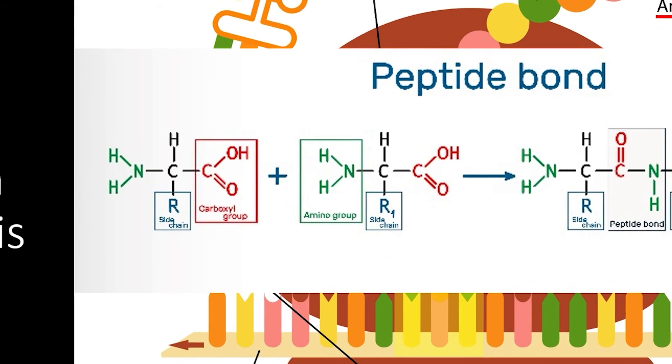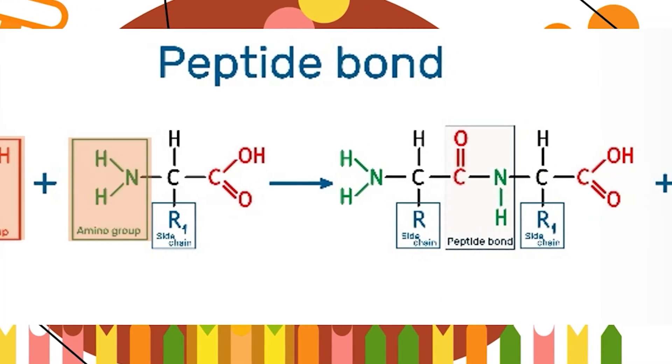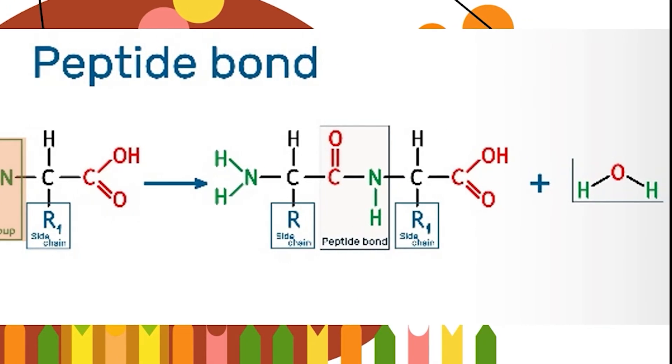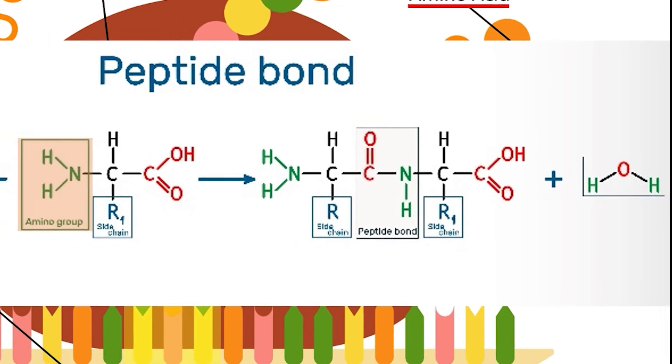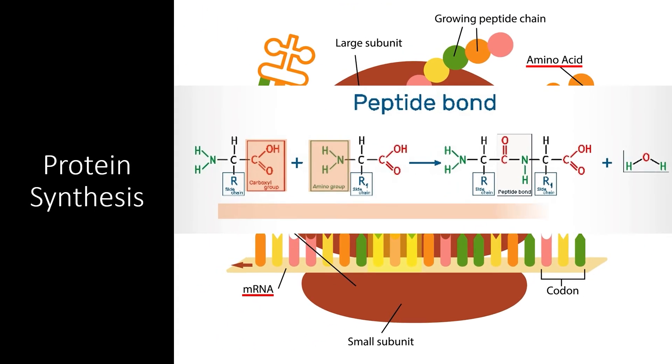The new covalent bond is formed between the carboxyl group on the growing peptide chain and the amino group on the new amino acid. This leaves another carboxyl group exposed, allowing another amino acid to be added in the same direction. This is important because it means that amino acids can only be added in one direction. The amino terminus on the first amino acid cannot be added to, meaning that peptides can only be made in the order that the mRNA dictates.